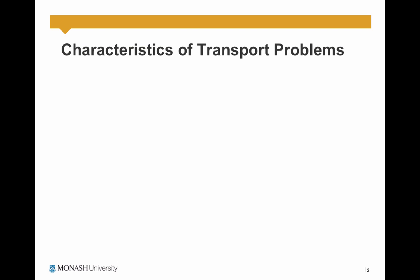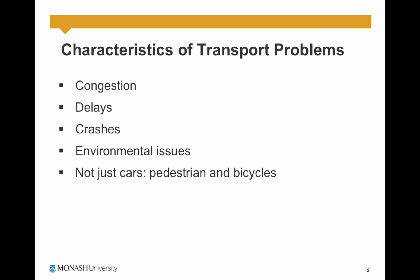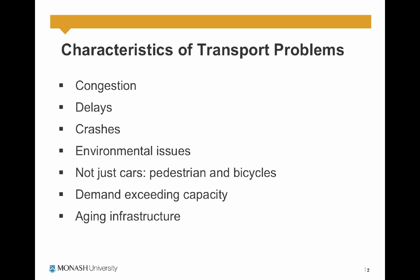What are the characteristics of transport problems usually? Congestion is one of the wide problems in transportation — delays coming from congestion, crashes related to transportation safety, environmental issues. Transport systems are not just about cars; pedestrians and cyclists are as important. Demand exceeding capacity relates to congestion, aging infrastructure in many developed countries, and underinvestment in transport supply systems.